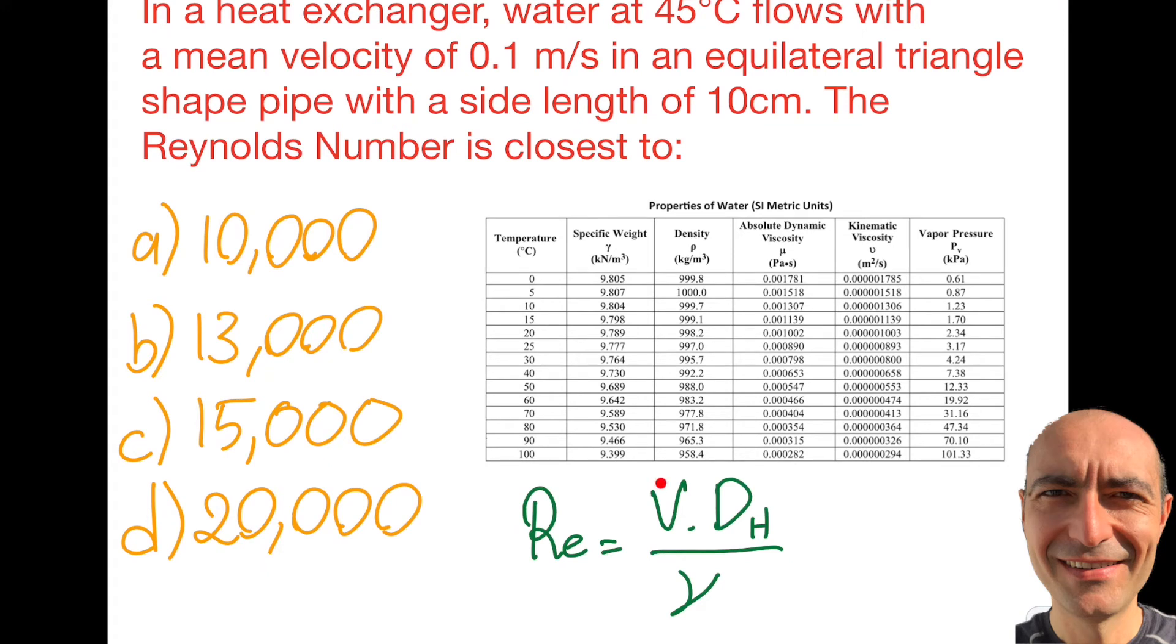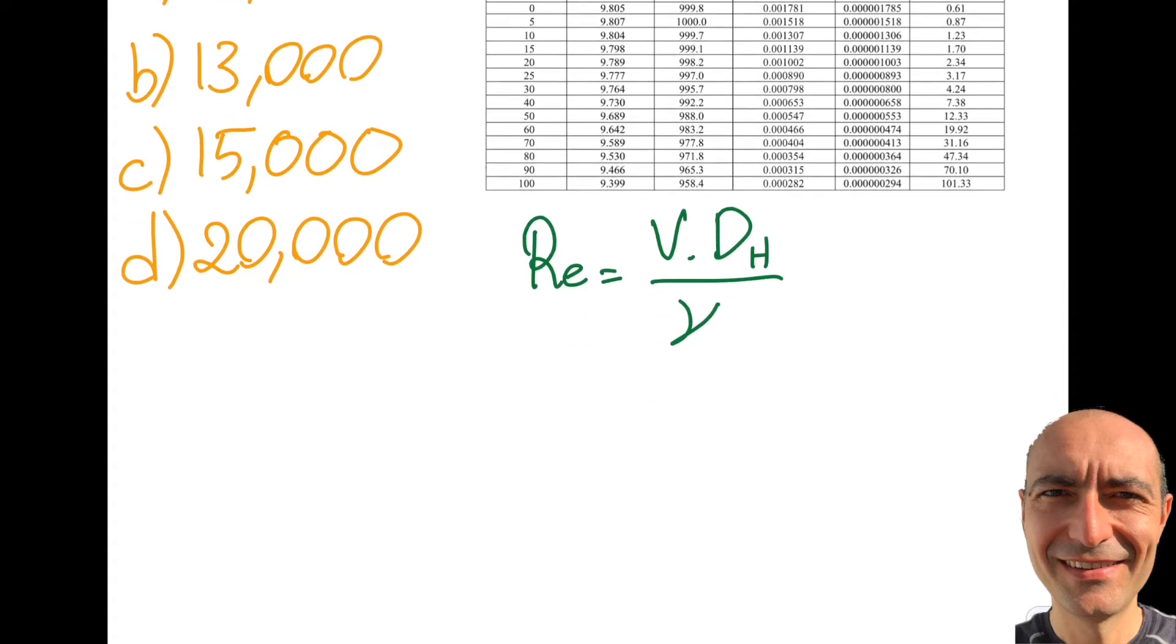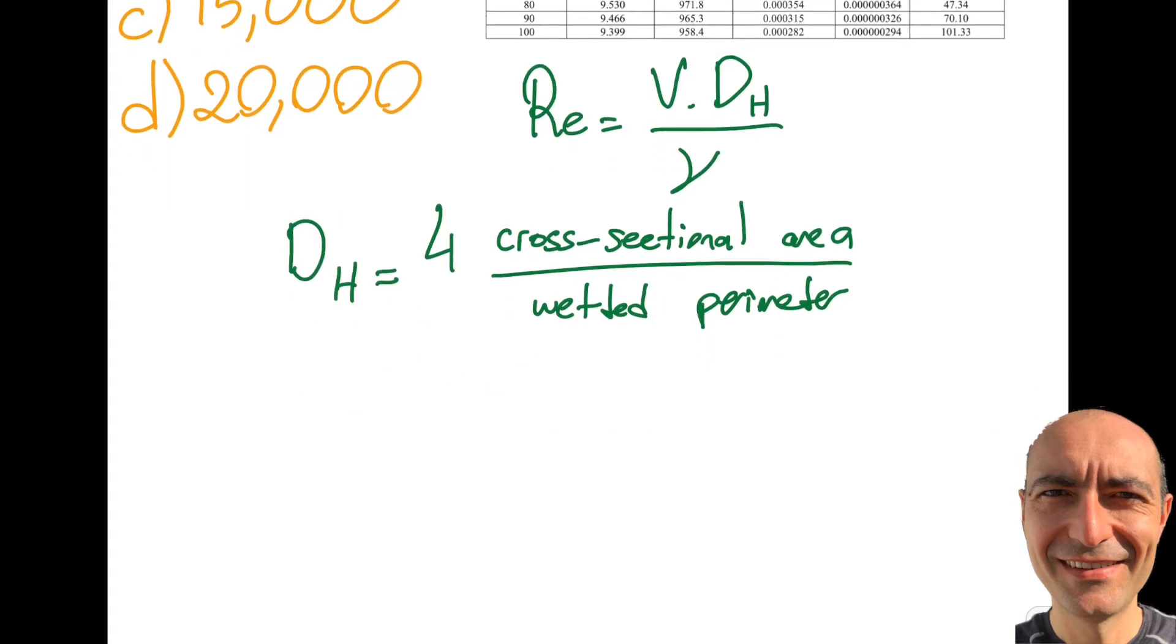Looking at the question, the velocity is 0.1 meter per second, so I'm good to go. What about the diameter? Can I simply call it 10 centimeters? You will get a wrong answer. I did this on purpose. Let's properly do it. The hydraulic diameter, DH, is four times the cross-sectional area divided by the wetted perimeter.